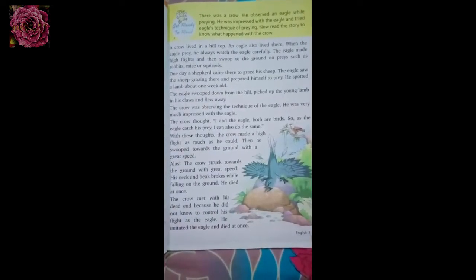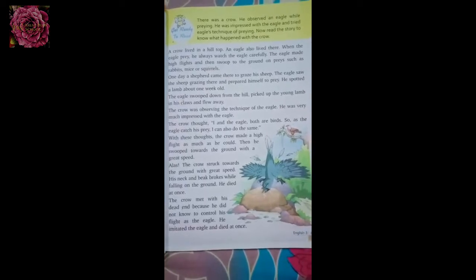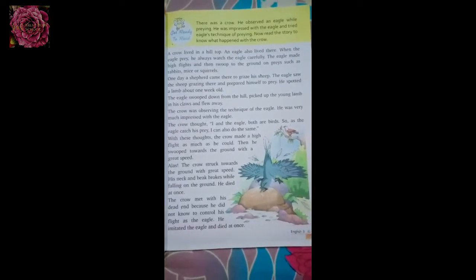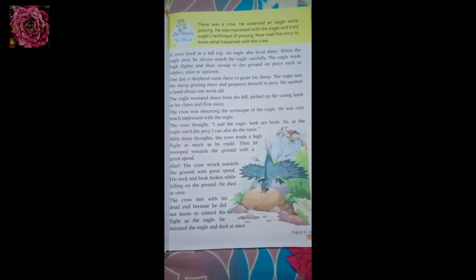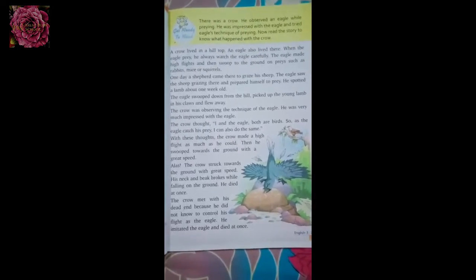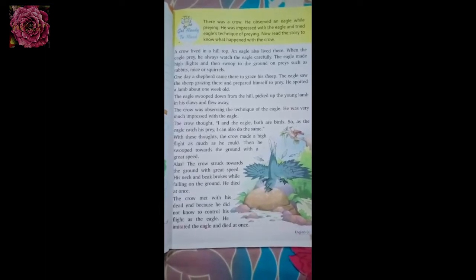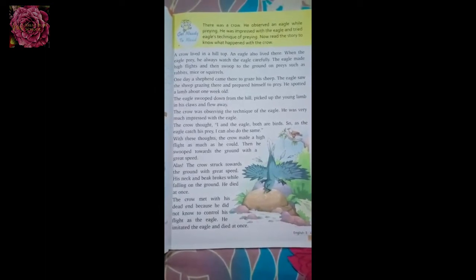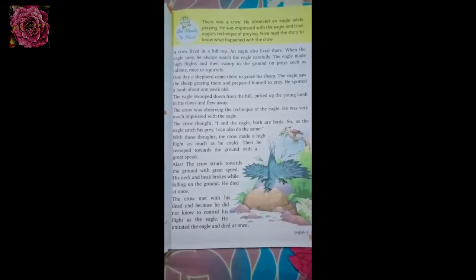We need to understand — never try acting foolish like this crow. Always try to be wise and clever. Use your brain and try to adapt your own qualities and learn with your qualities. I hope you all have understood this small story and learned what the writer was trying to tell us.